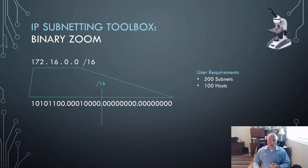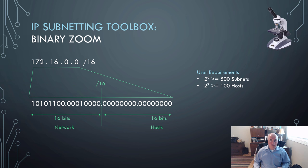Let's add in some user requirements. Those same ones we used earlier in this lecture. What if we want 500 subnets and 100 hosts? Well, we already did this math. We figured out that 2^9 was 512, and 2^7 was 126.